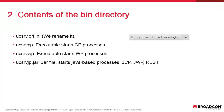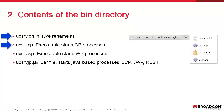The bin directory contains a bunch of libraries with the ESO extension. You can ignore them. We need to explain four key files. ucsrv.ori.ini is the configuration file, which has to be renamed ucsrv.ini. We have two executables. ucsrv.cp starts the CP process. CP stands for Standard, Non-Java-Based Communications.